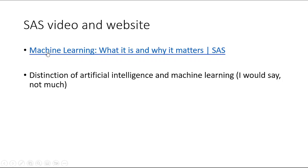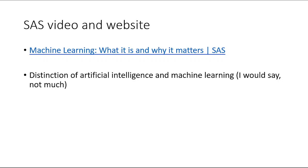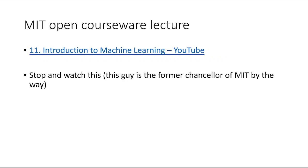SAS used to be my favorite software, and they have a nice video — a little dated — called 'Machine Learning: What It Is and Why It Matters,' distinguishing artificial intelligence from machine learning. To me, machine learning and AI are sort of the same thing. To separate that from data mining: data mining is the set of exploratory techniques to find patterns in data upon which AI and machine learning build. I put a link to this on Canvas — this is an excellent lecture by the former chancellor of MIT, a really excellent basic introduction to machine learning.